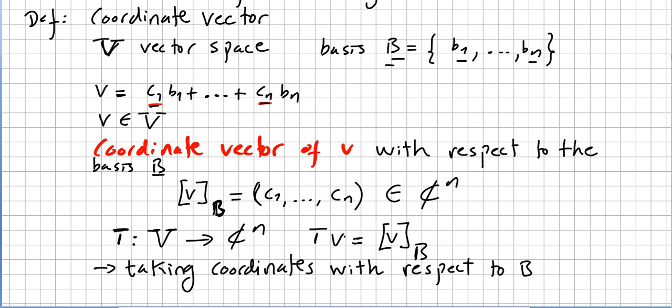In a certain way, we are writing the vector based on the basis B. That's why we call it taking coordinates with respect to B. The vector v is written based upon this basis, and that's the definition of coordinate vector.